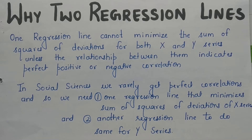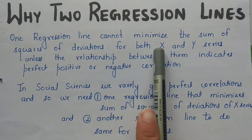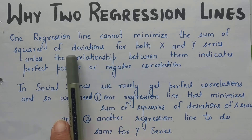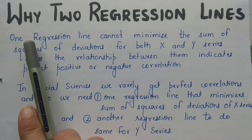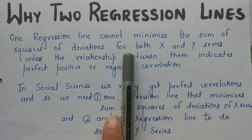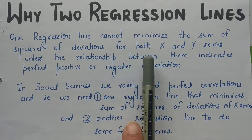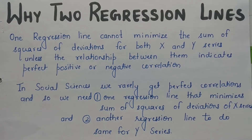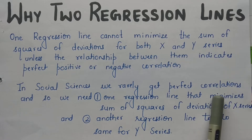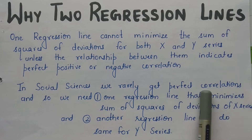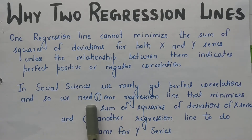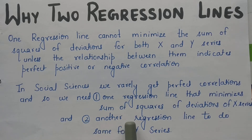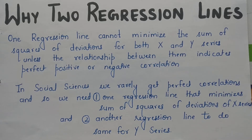Why do we need two regression lines? If we have two variables x and y, one single regression line cannot minimize the sum of squares of deviation for both the x and y series. One single regression line cannot minimize the sum of squares of deviation unless the two variables have perfect positive or perfect negative correlation. And in social sciences, it is very rarely the case that two variables are perfectly positive or perfectly negative correlated. So we need two regression lines — one that minimizes the sum of squares of deviation of the x series, and another that minimizes the sum of squares of deviation of the y series.